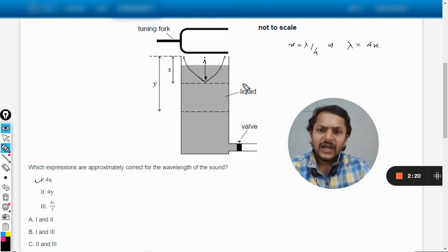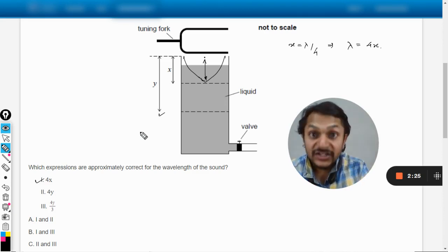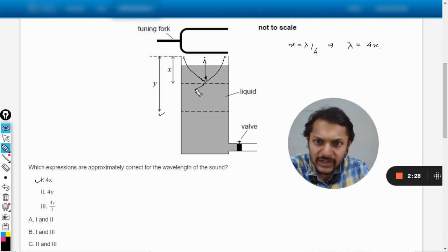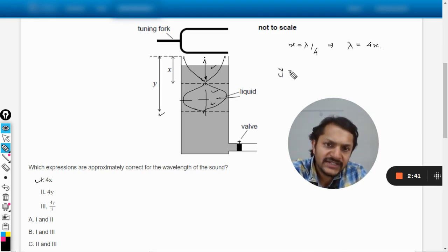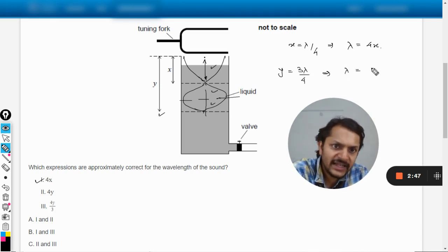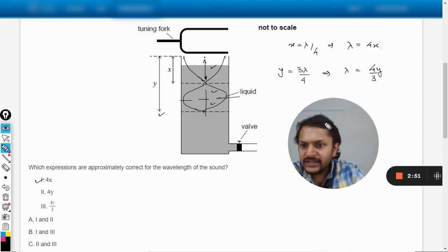Now what is happening in the case of y? This is the next harmonic, so this is the third harmonic. It will be looking like this. How many harmonics are now here? This is third harmonic: lambda by 4, lambda by 4, lambda by 4. So in this case we can say y is equal to 3 times lambda by 4, and from here it is evident that lambda is equal to 4y by 3.